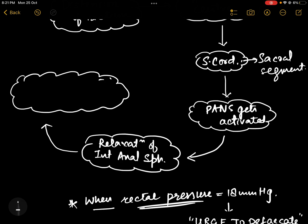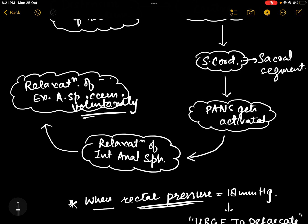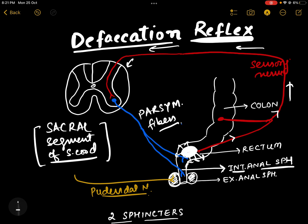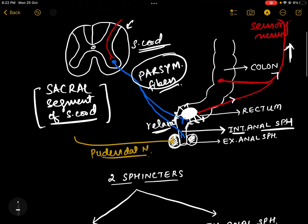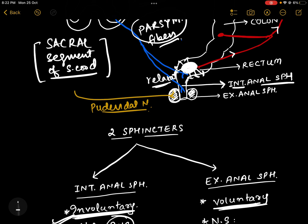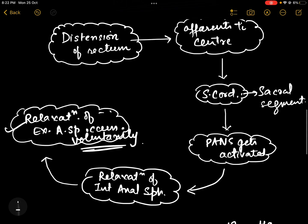There is activation of the parasympathetic nervous system, which results in relaxation of the internal anal sphincter. The process of defecation will then involve relaxation of the external anal sphincter as well. Relaxation of the external anal sphincter occurs voluntarily, depending on the timing and environmental conditions. When conditions are right, there is relaxation of the external anal sphincter, resulting in defecation.